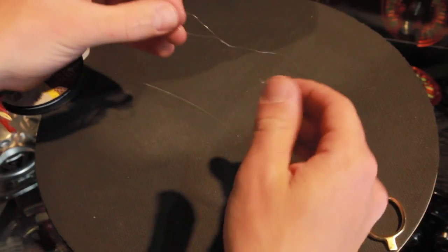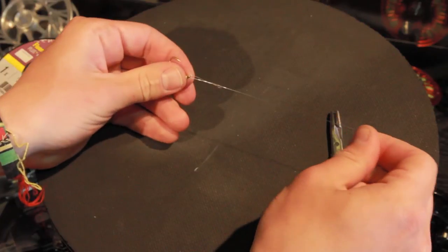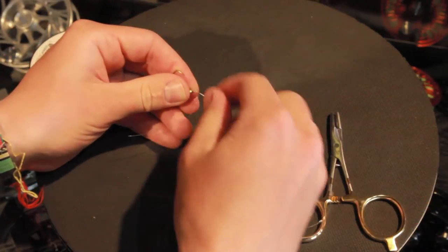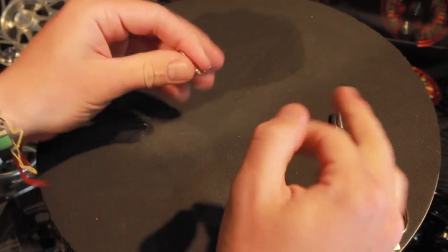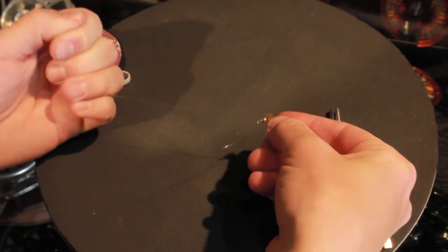Moisten your knot, cinch it down, and you successfully made a hemostat clinch knot. Clip your tag ends and you're done.